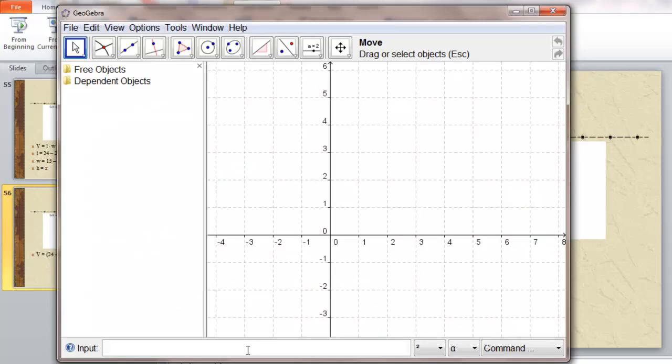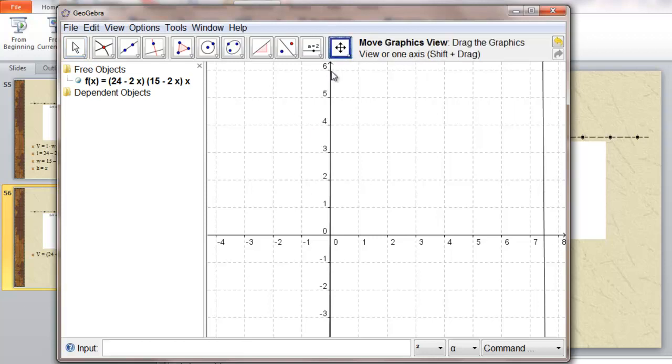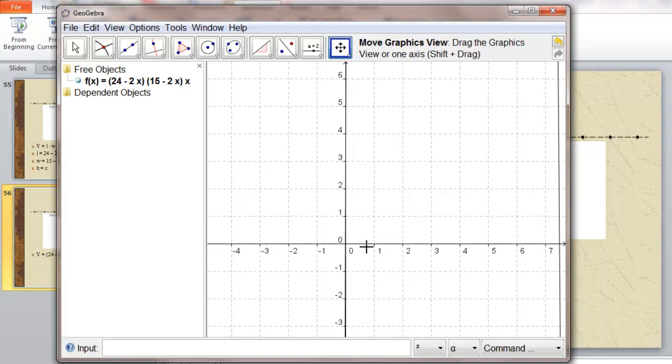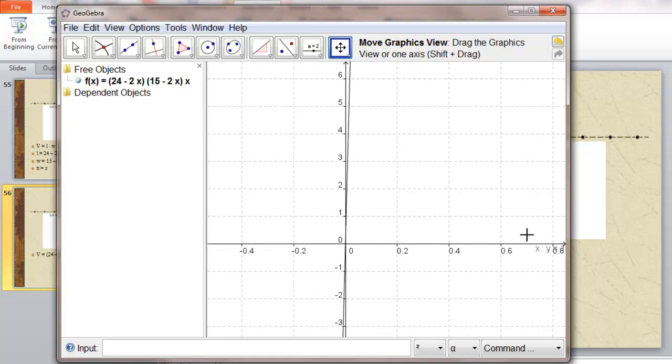Here, 24 minus 2x times 15 minus 2x times x. Probably way off our chart. So, there it is.